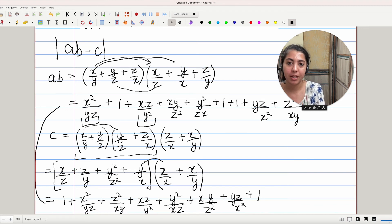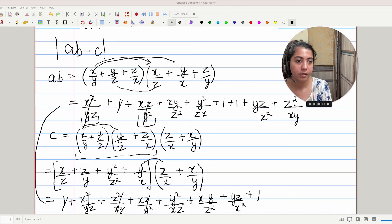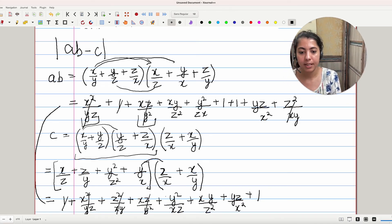Since we have to find the value of AB minus C or mod of AB minus C, let's cancel the terms that are similar. This can be cancelled out here. One can be cancelled out here. And further we have XZ/Y², then Z²/XY, that will be this. Then we have Y²/XZ, XY/Z², and YZ/X², and also 1 will be cancelled. So what we are left with is this 1. So our answer is 1.